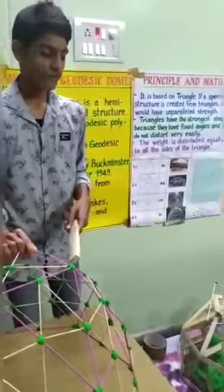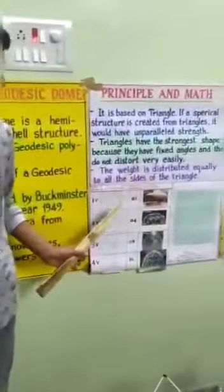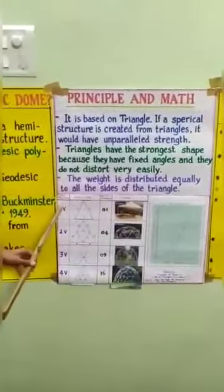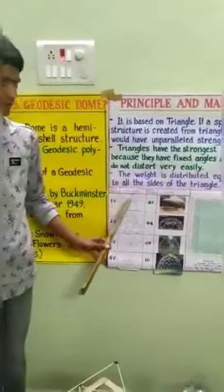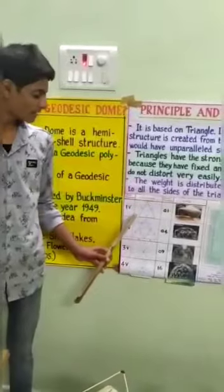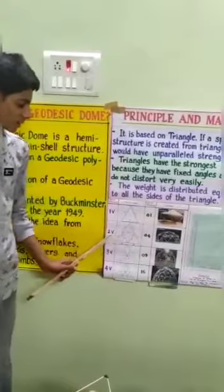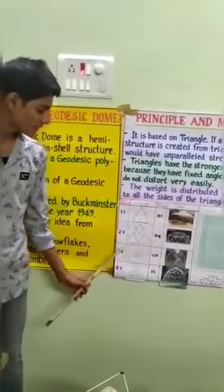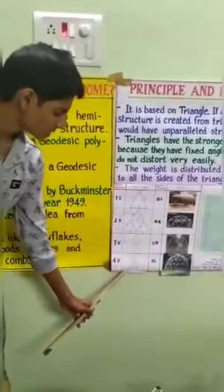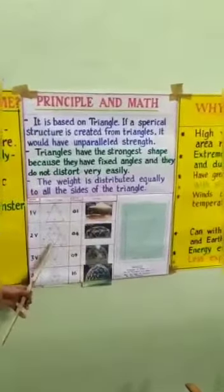In this project, we find out an equation for the construction of domes. The frequency of the dome is V, and the number of triangles equals V squared. A 1V dome is a 1-frequency dome, a 2V dome is a 2-frequency dome. So a 1V frequency dome has 1 triangle, a 2V frequency dome has 4 triangles, a 3V frequency dome has 9 triangles, and a 4V frequency dome has 16 triangles, as shown in the corresponding figures.